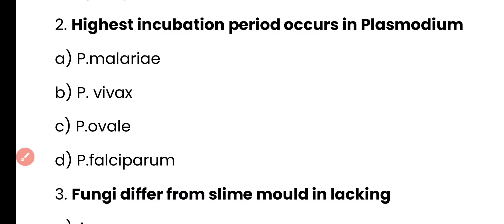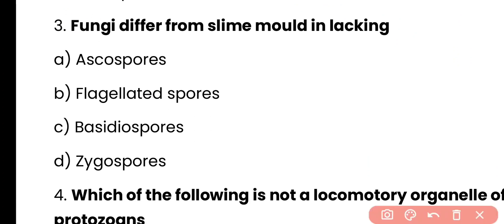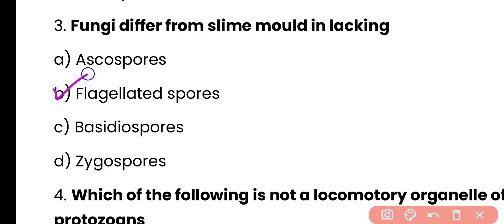Question number 3. Fungi differ from the slime mold in lacking: ascospores, flagellated spores, basidiospores, or zygospores? Correct answer is option B. Flagellated spores are present in slime mold while they are absent in fungi.